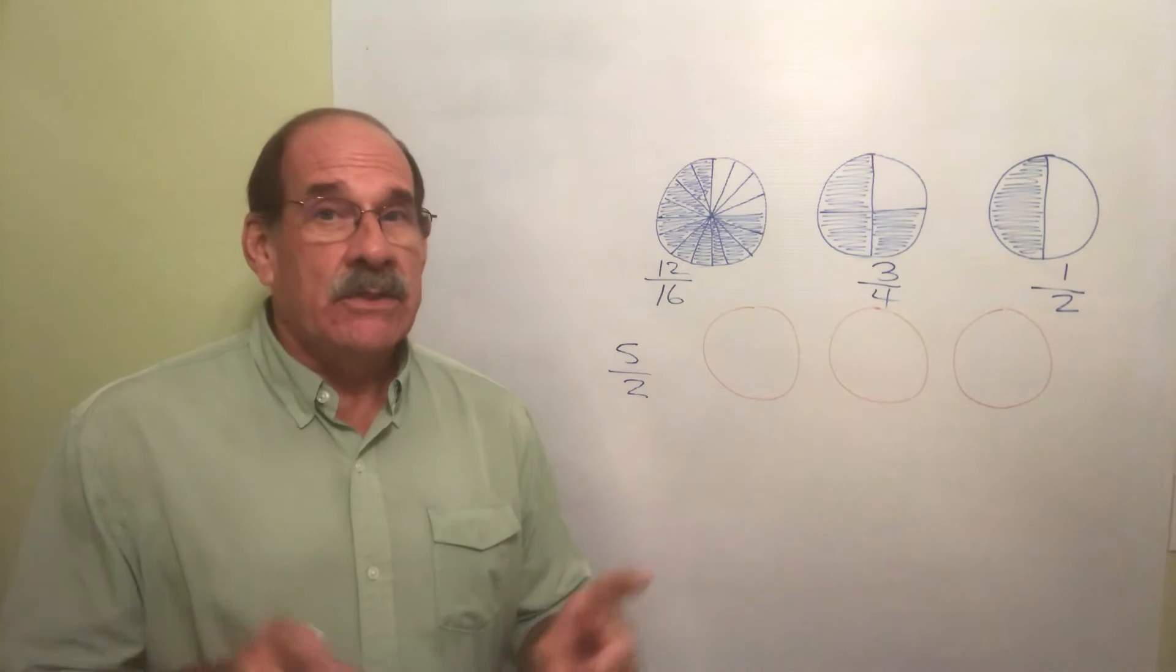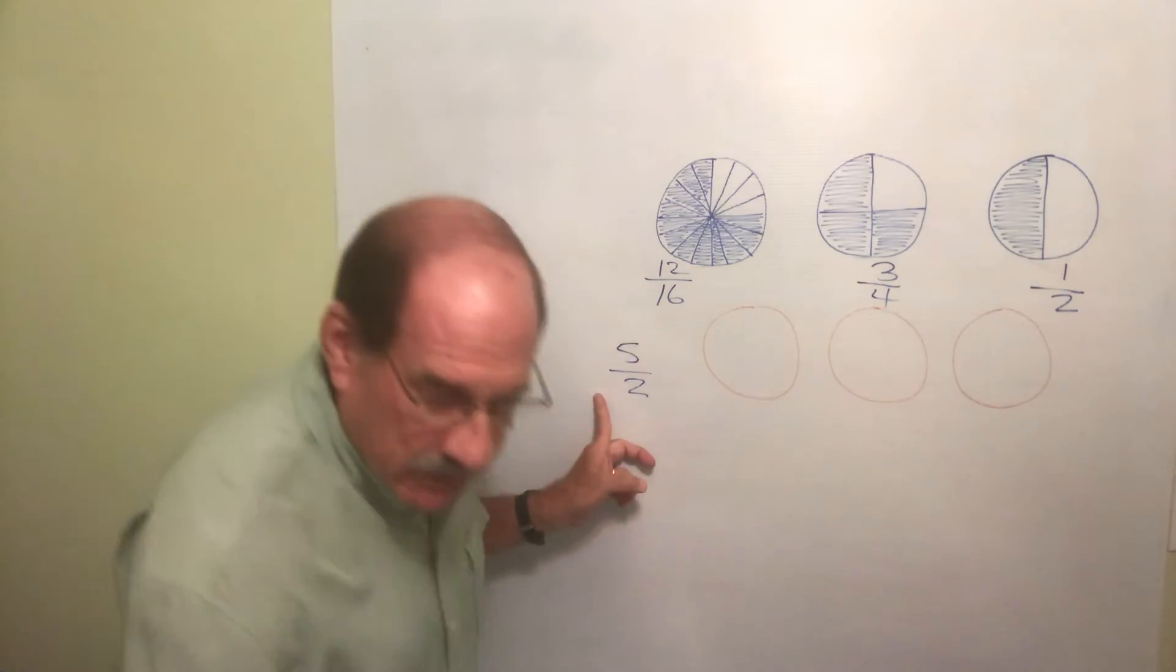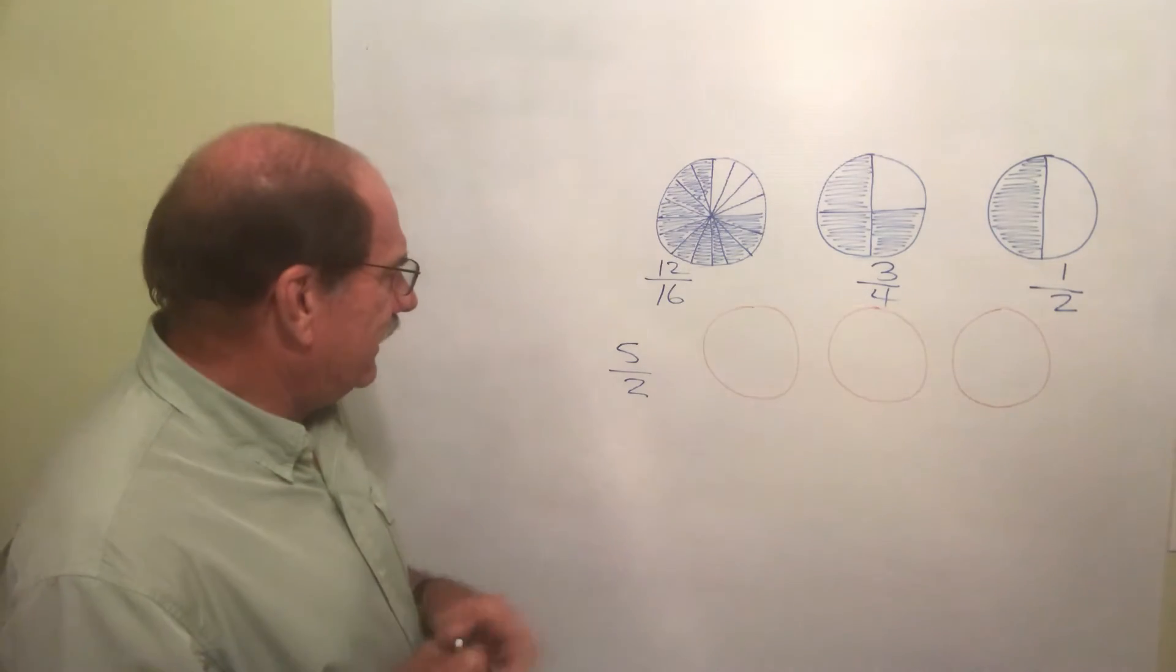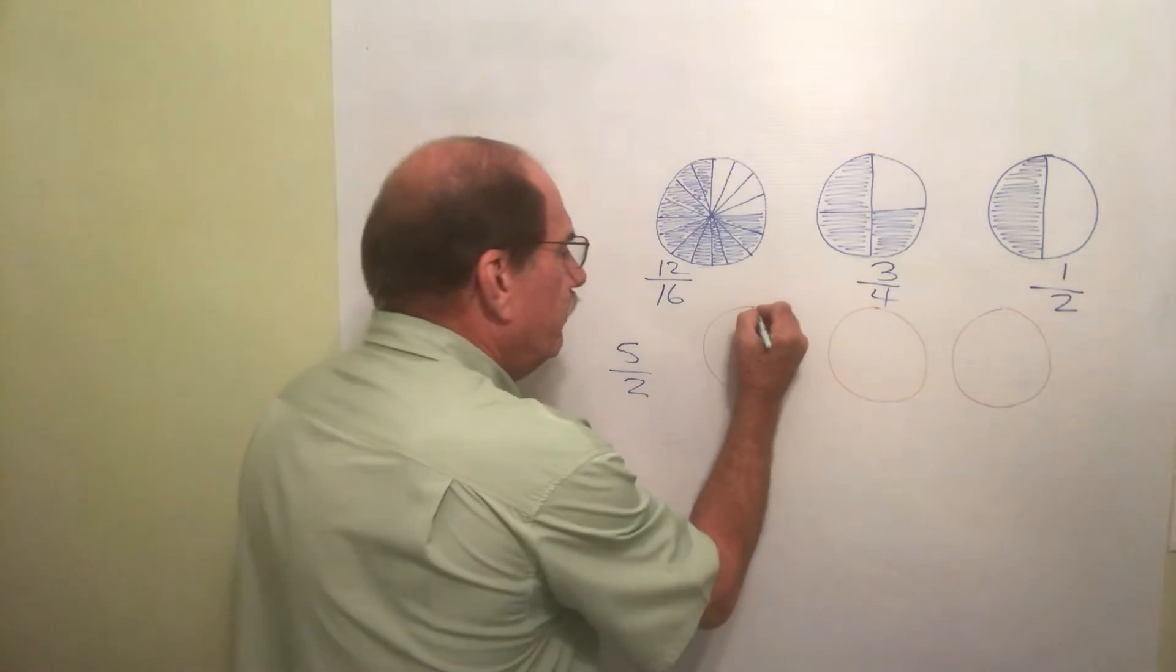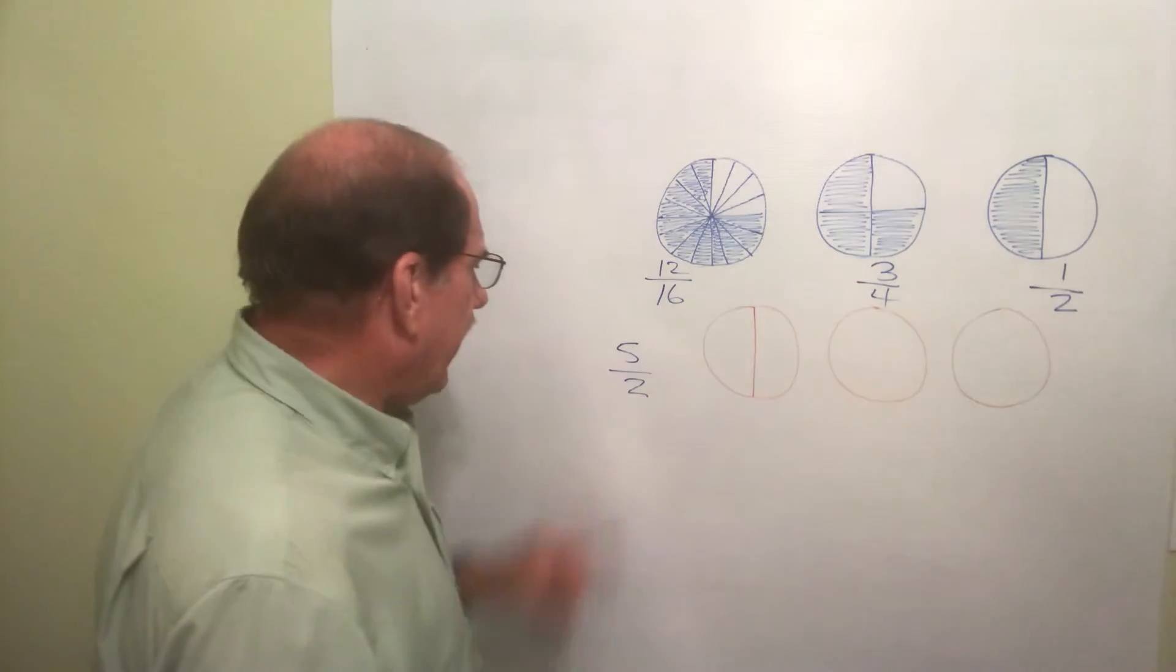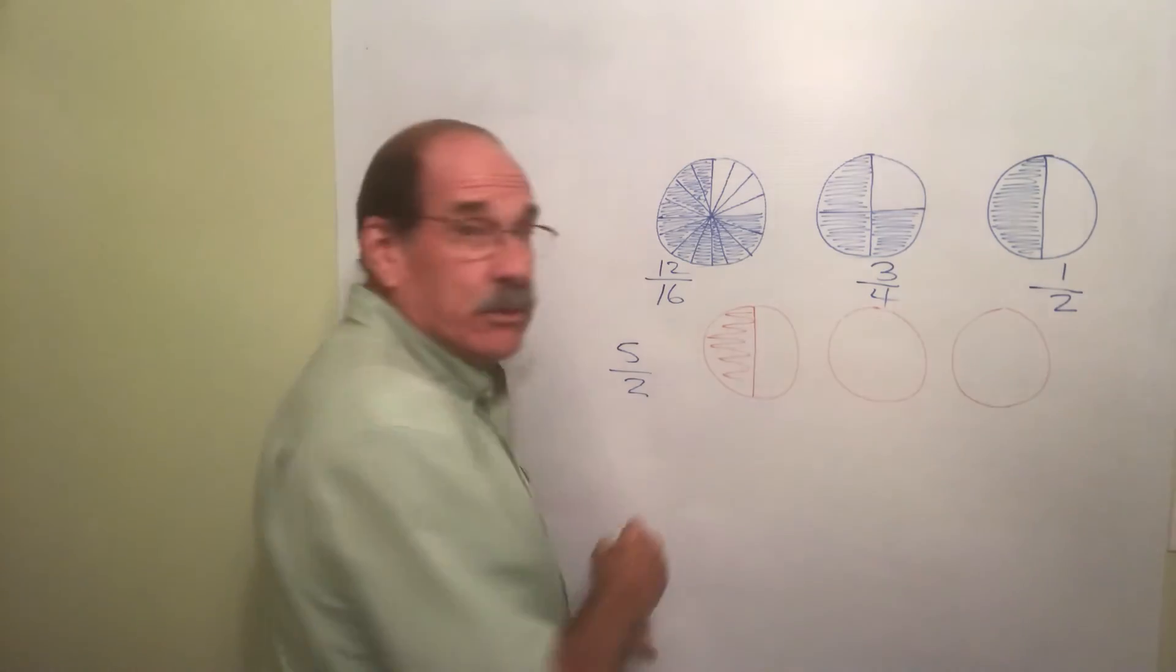Let's see what that means. Five halves of a pizza still means what I just said - the bottom number is how many pieces I cut my pizza into. I cut it into two pieces. I got a pizza right here, I cut this pizza into two pieces, two equally sized pieces.